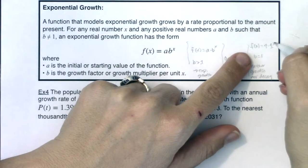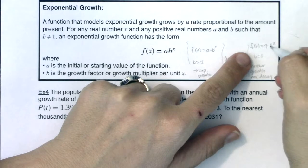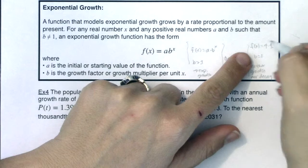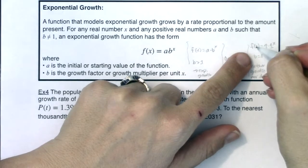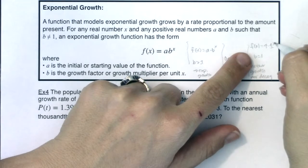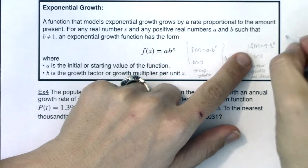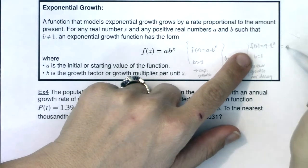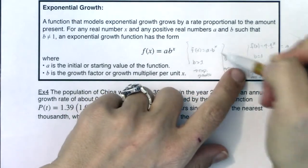Plug 1 in, you get 1 to the 1, which is 1, 4 times 1 is 4. Plug 2 in, 1 squared is 1, 4 times 1 is 4. Plug 1700 in, 1 to the 1700 is 1, 4 times 1 is 4. No matter what, I get 4 back out. I have a constant here. So I'm neither growing nor decaying.